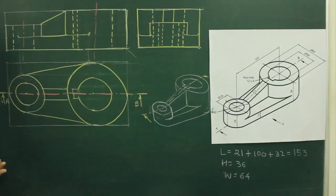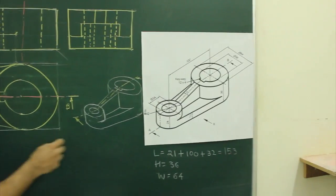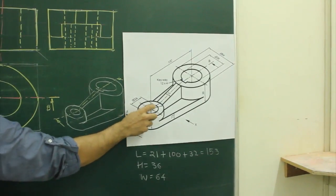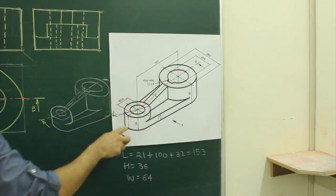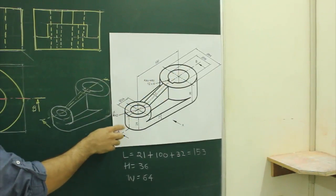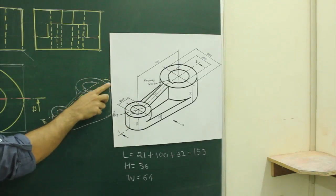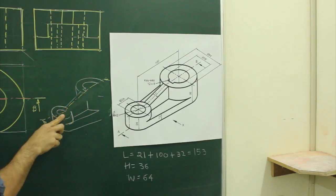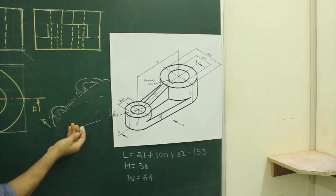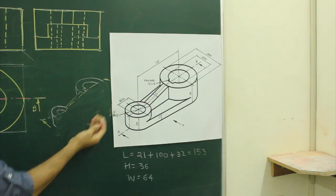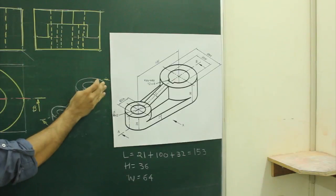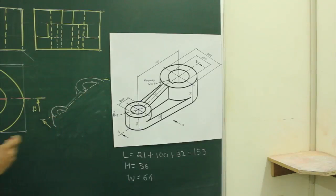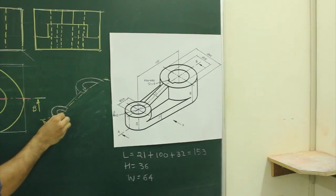In this problem, they want a sectional front view, and the cutting plane line is passing through this part. This is cutting plane line AB. So what we will do — we will remove the front portion. This much portion will go away. When you draw it, it will look like this.